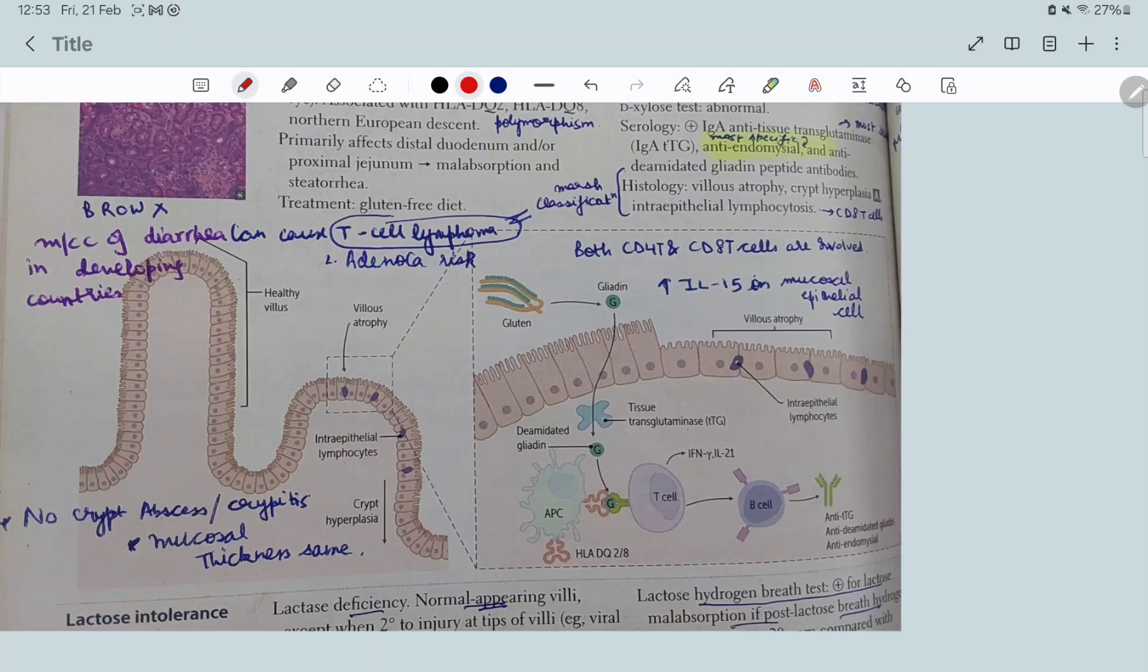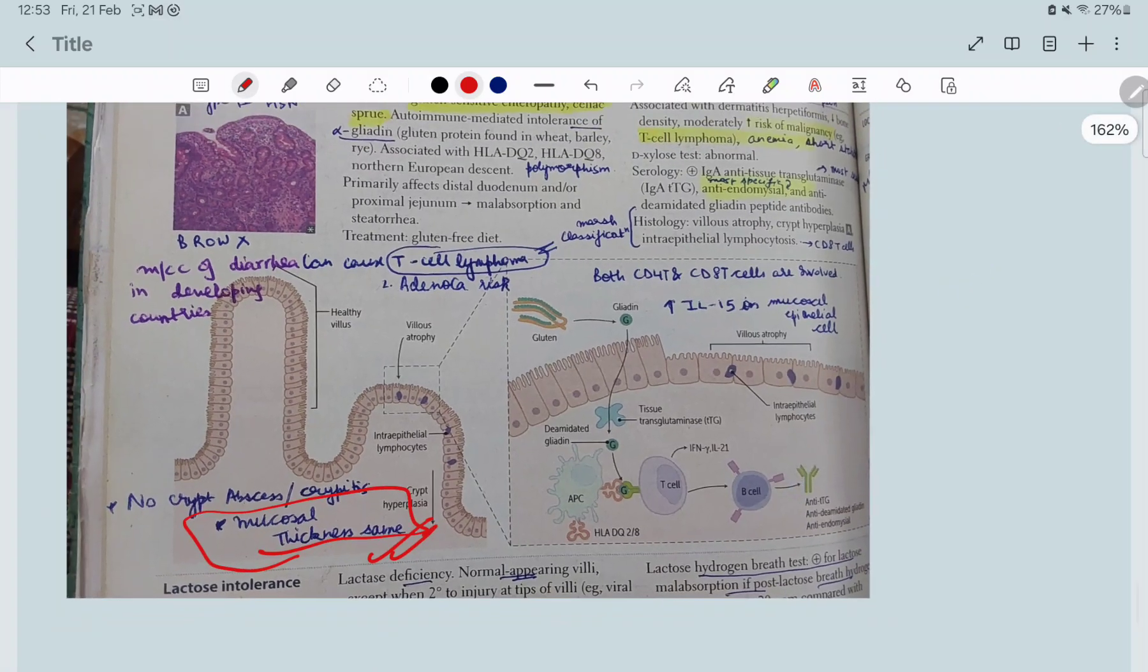But crypt hyperplasia occurs. This means the crypt is increasing but the villi are decreasing, but the mucosal thickness still remains the same as the crypt hyperplasia is occurring. This is very important. And there is increased intraepithelial lymphocytosis. This is about celiac disease.